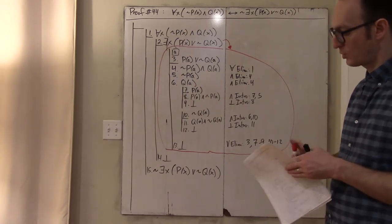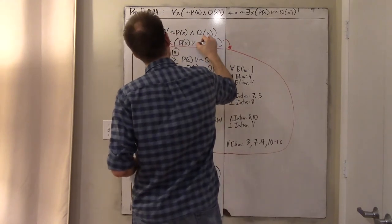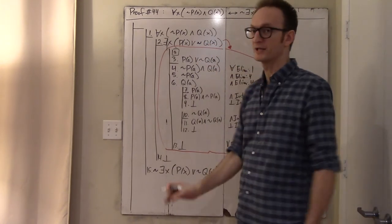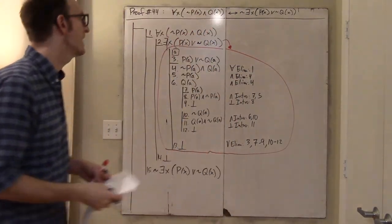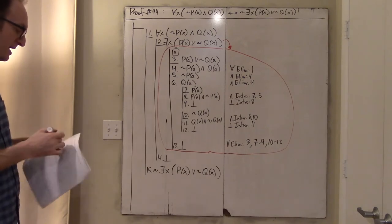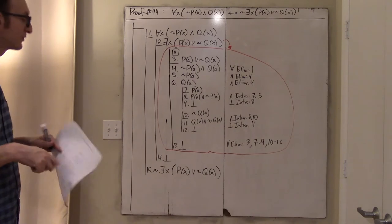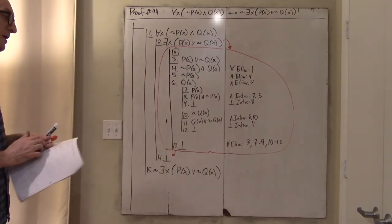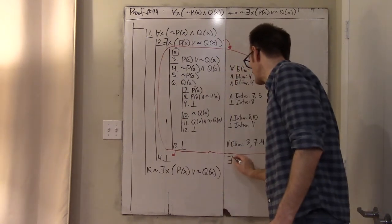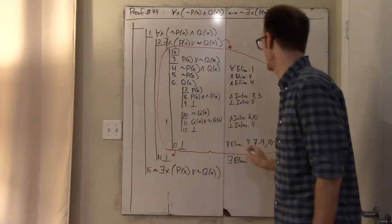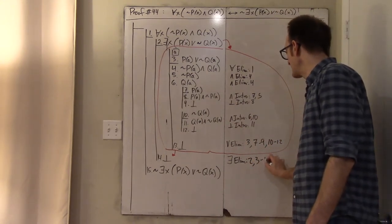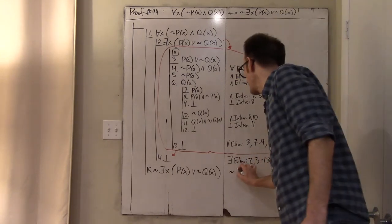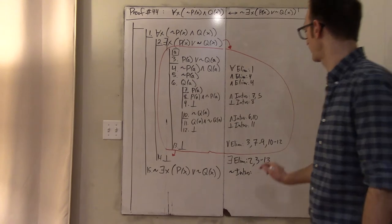This entire thing in the red circle was just my exploration of line two. Line two said that someone exists with the property of being pretty and not quiet, so I named that person A temporarily. That led to a contradiction, so the contradiction simply follows from line two. This is an existential elimination — I eliminated the existential in line two by methodically drawing out a contradiction in lines three to thirteen. So this is negation intro, two to fourteen.